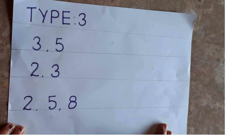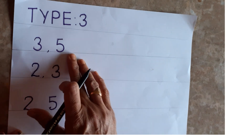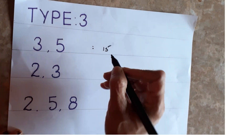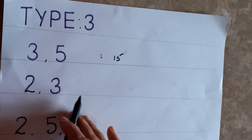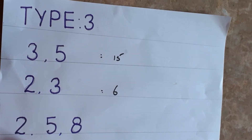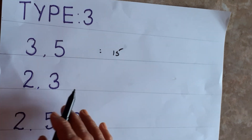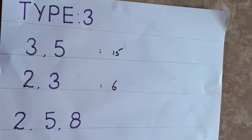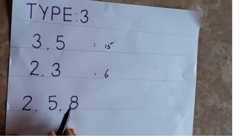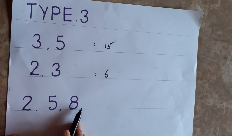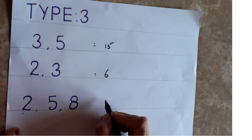Type 3 is for prime numbers. Prime numbers have only 1 and themselves as factors. For 3 and 5: multiply them — 3 × 5 = 15, so LCM is 15. For 2 and 3: 2 × 3 = 6, LCM is 6. For 2, 5, and 8: 5 does not divide into 8, so multiply all — 2 × 5 × 8 = 40 — and 40 is divisible by each of them. So LCM is 40.